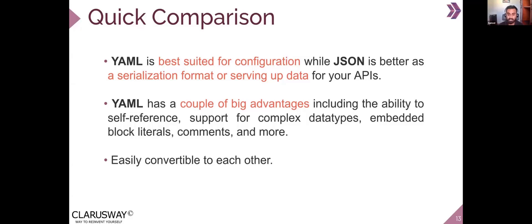Whatever operation is going to happen with that JSON — for example, if the server receives the JSON it is going to do some API operations or database operations — JSON plays a very important role in transmitting data between your servers and APIs. YAML, on the other hand, has a couple of big advantages including the ability to self-reference, support for complex data types, embedded block literals, comments, and more.